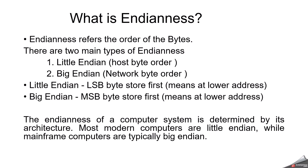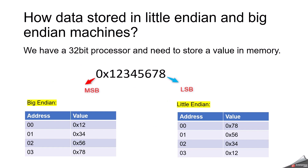There are two main types of endianness: little-endian and big-endian. Little-endian follows host byte order, while big-endian is called network byte order. In little-endian, the LSB byte is stored first at the lower address. In big-endian, the MSB byte is stored first at the lower address. The endianness of a computer system is determined by its architecture. Most common computers are little-endian, while mainframe computers are typically big-endian.